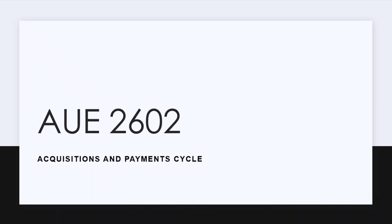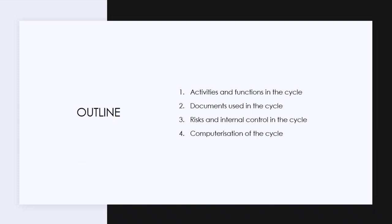The difference today is simply a different cycle — it's the acquisition and payment cycle. In today's class we're going to look at the activities and functions within this cycle, the documents used, the risks and internal controls, and the computerization part of the cycle, just like last week where we looked at both manual and computerized controls.